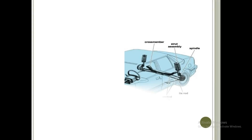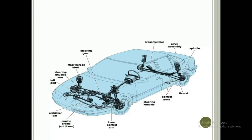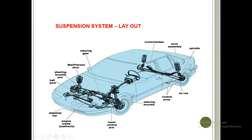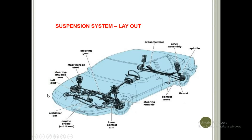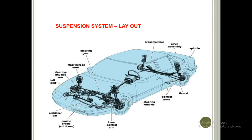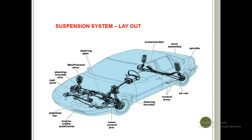This image shows the suspension system located in your car's layout. We can see the strut assembly provided at the rear wheels, a tie rod, control arms, and a spindle at the rear end. At the front end there are many mechanical joints such as the steering gear mechanism, MacPherson strut for balancing and turning, steering knuckle arm, ball joints, stabilizer bar, and lower control arm. These are all the linkages known as the suspension system in the automobile.